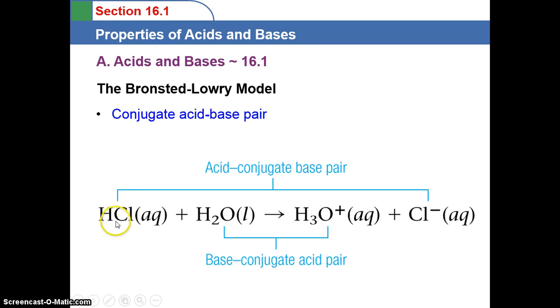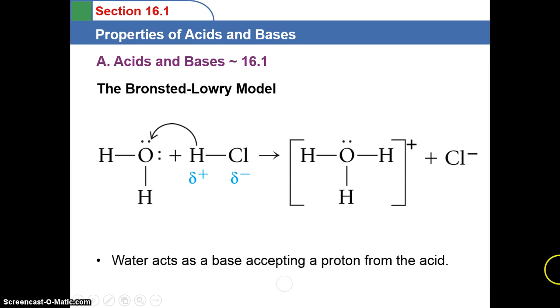It's going to donate this H and become Cl- over here. So this is our acid, because it's a proton donor. This is its conjugate base, because if we reverse this reaction, this would be our proton acceptor. The water, on the other hand, acts as the base, because it accepts the proton.